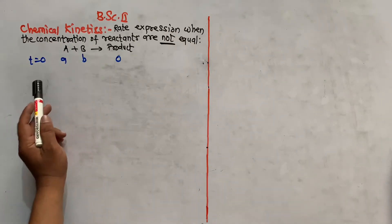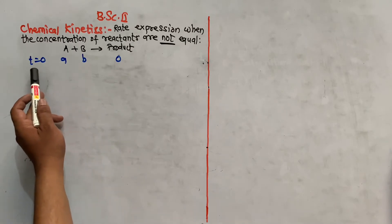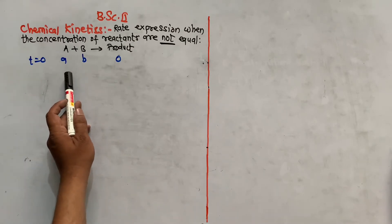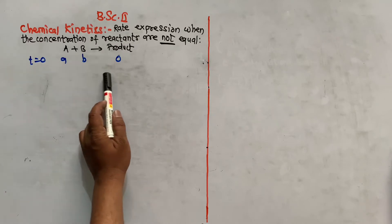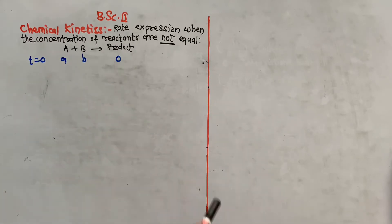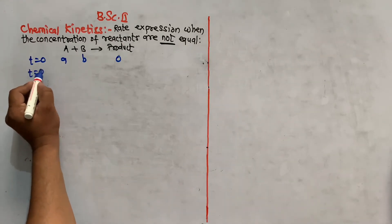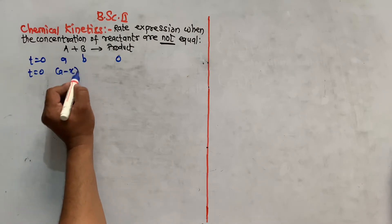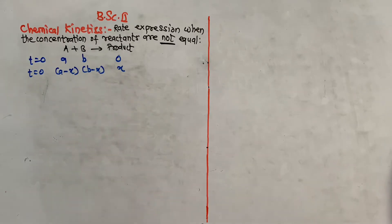Let us consider reactants A and B reacting to form a product. At initial time T=0, the concentration of A is 'a' and that of B is 'b', while the concentration of the product is 0. When the reaction proceeds to some time T, the remaining concentration of A is (a - x), B is (b - x), and the product concentration is x.